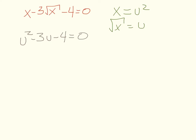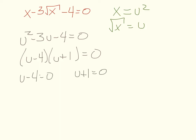We can factor because there are two factors of negative 4 that combine to give negative 3 — those are negative 4 and positive 1. Setting each factor equal to zero and solving gives u equals 4 and u equals negative 1. Now, remember you're solving for x, not u. Substituting back: the square root of x equals 4, so squaring both sides gives x equals 16. Then the square root of x equals negative 1.